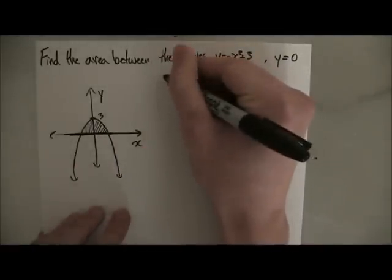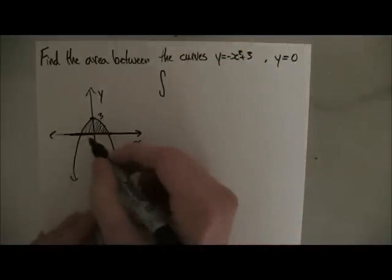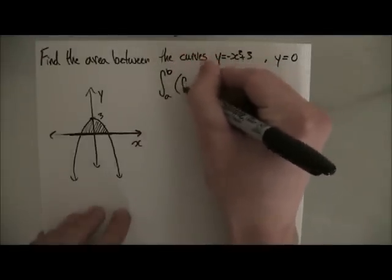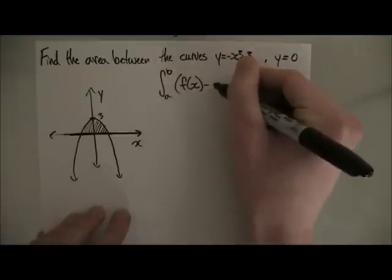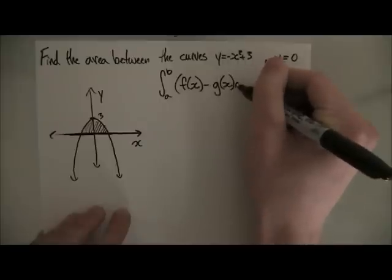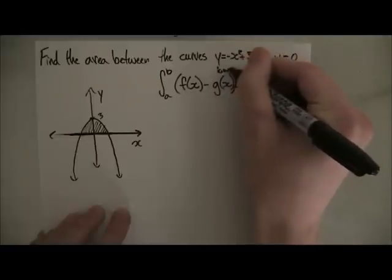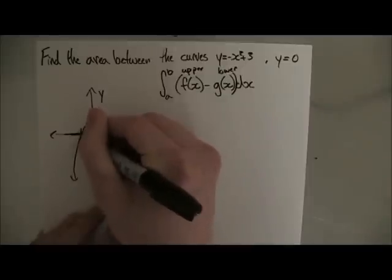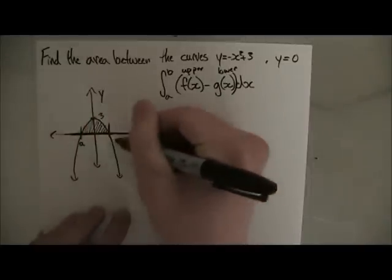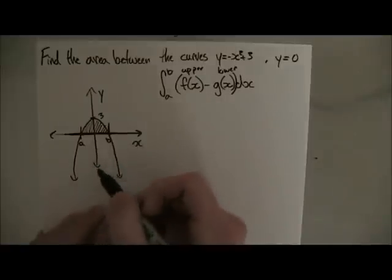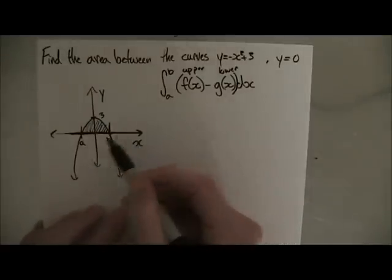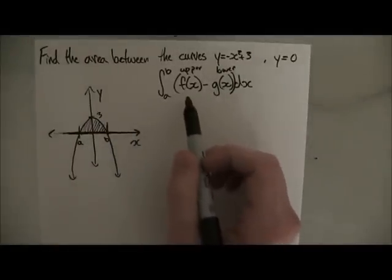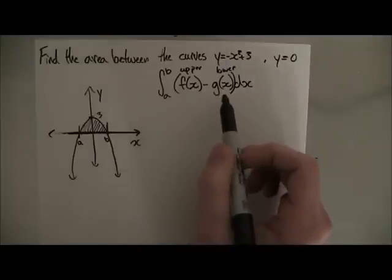If you remember, to calculate this area we have to do the integral from a to b of the upper function f of x minus the lower function g of x times dx. So we need to figure out what our a and b are, and which of these two functions is the upper function and which is the lower function.